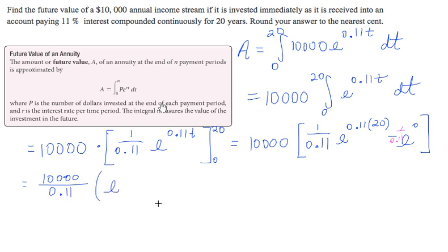Times e to the, now 0.11 times 20. Just go ahead and do that computation. It's 2.2 minus, I factored out that 1 over 0.11 right there. And e to the 0 equals 1.